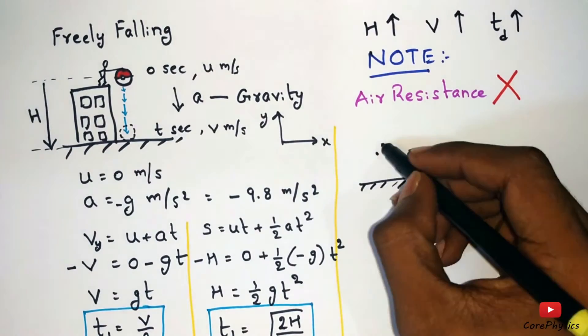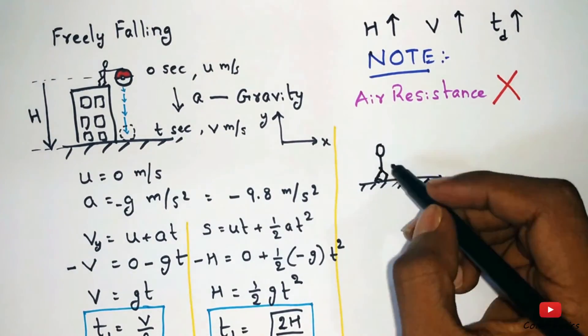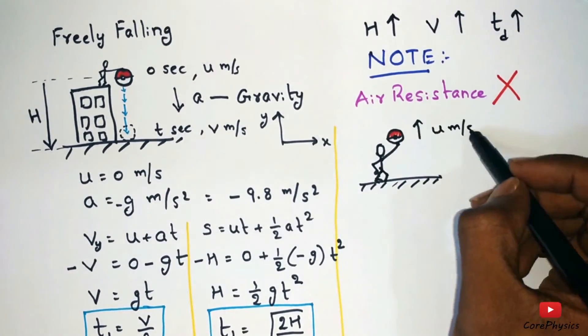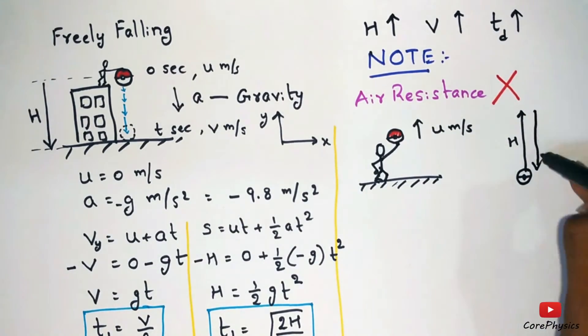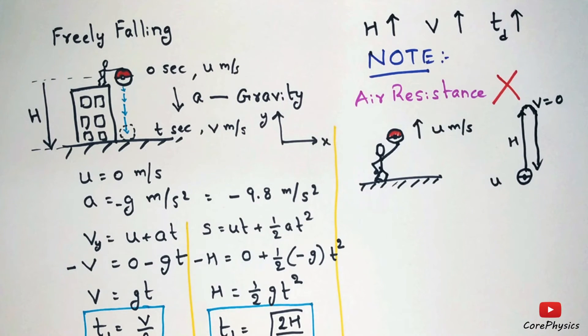Now let's consider another case where the ball is thrown straight up with a velocity of u meter per second. In this case the ball will reach a maximum height h and after reaching the maximum height it will return back as a freely falling body. At maximum height the velocity is equal to 0 and the velocity when it returns back is v1, and the time taken to go to the maximum height is called time of ascent and the time taken to return back is called time of descent.